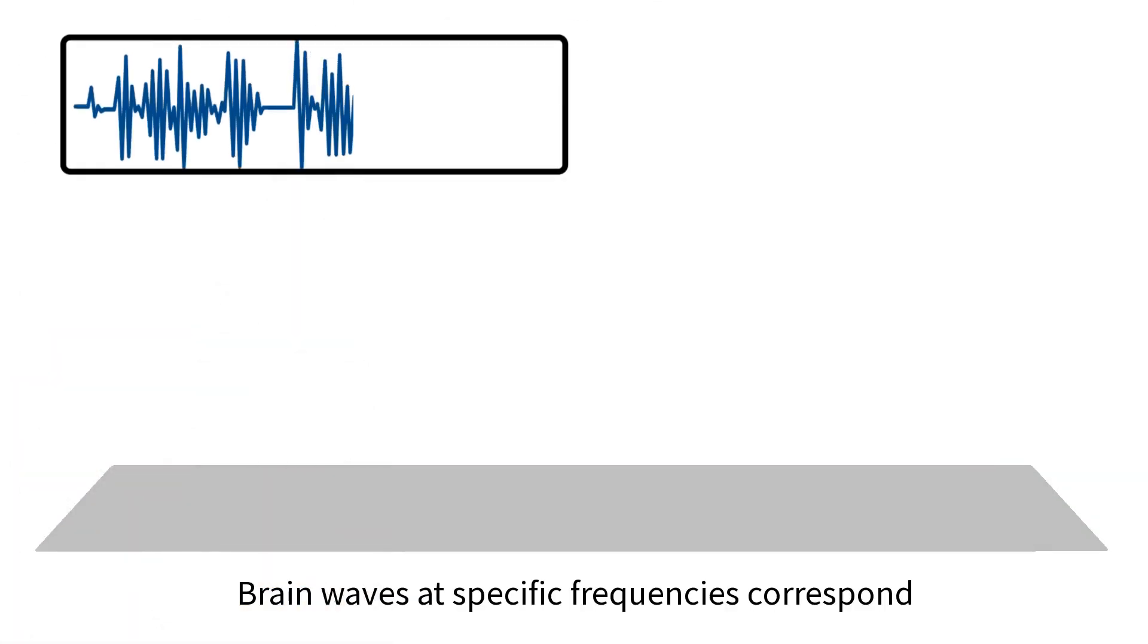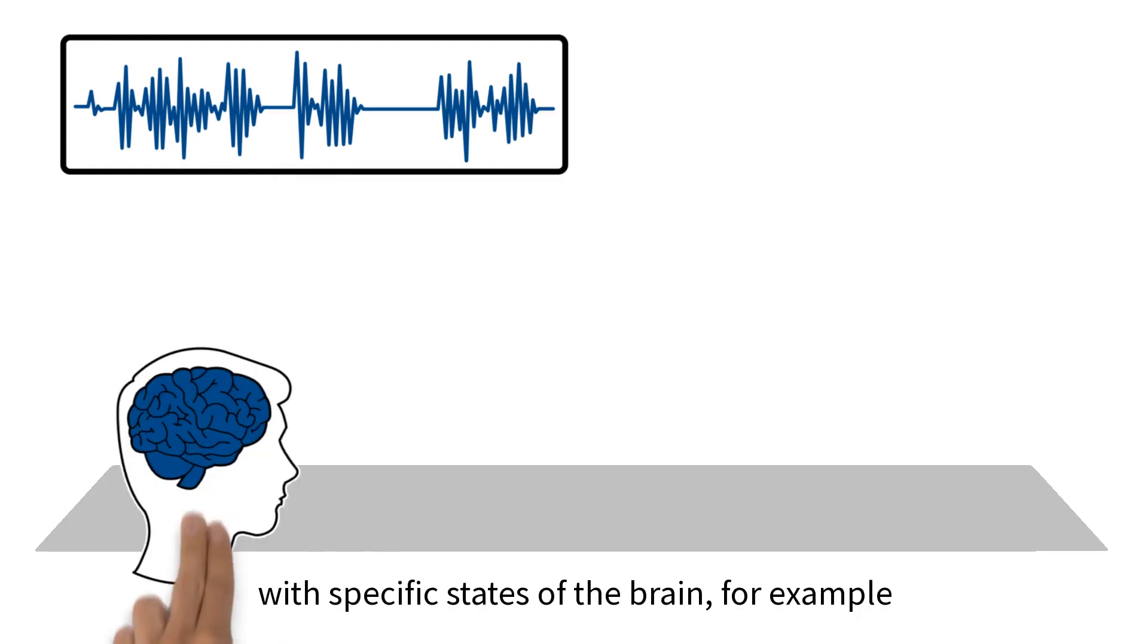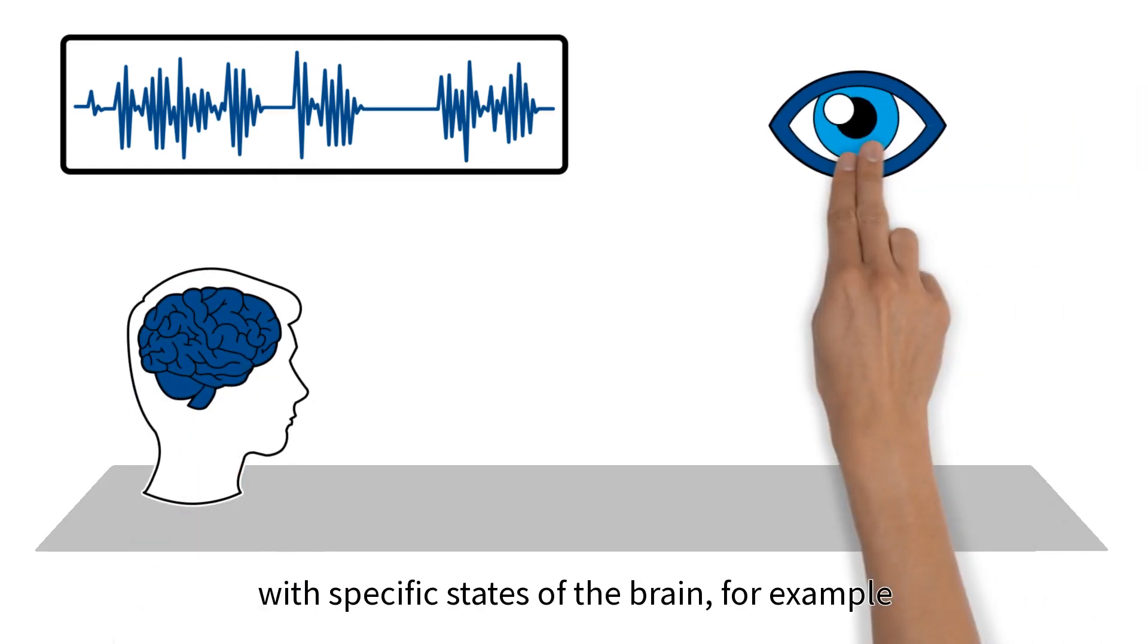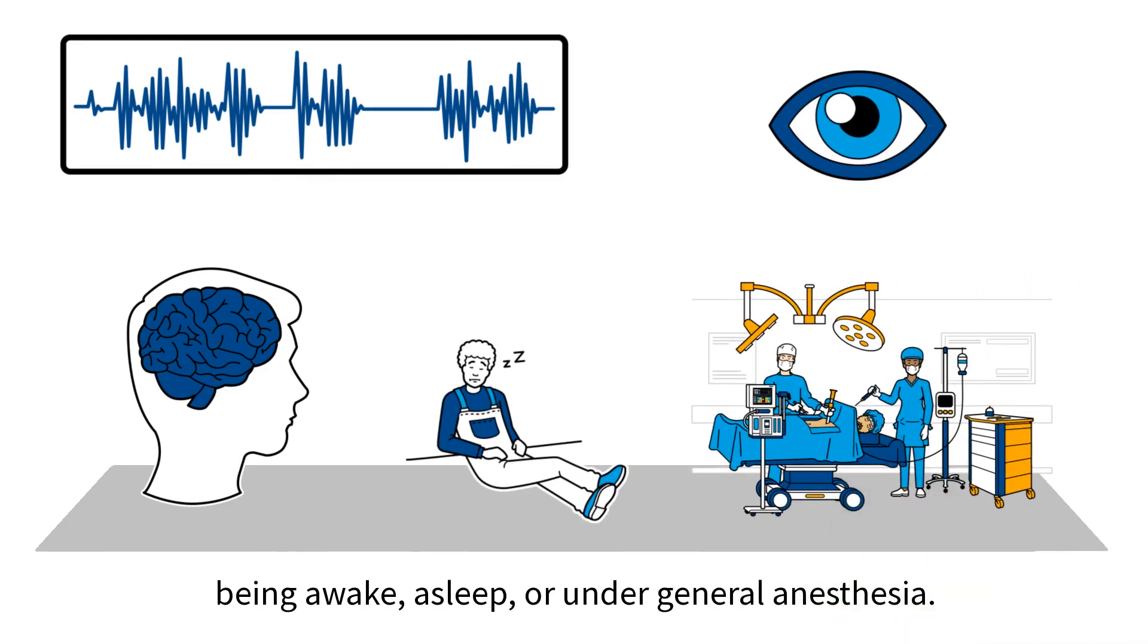Brain waves at specific frequencies correspond with specific states of the brain, for example being awake, asleep, or under general anesthesia.